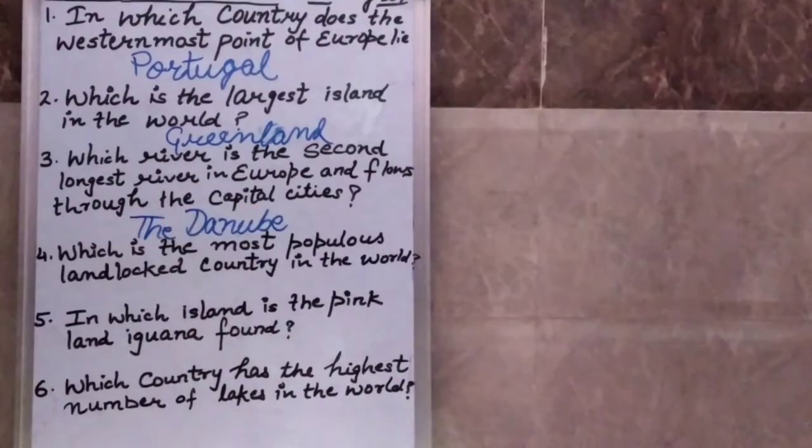Question number four: Which is the most populous landlocked country in the world? Populous means sabse jyada abadi wala. Duniya ka sabse adhik abadi wala landlocked desh koun sa hai? Your answer is Ethiopia.